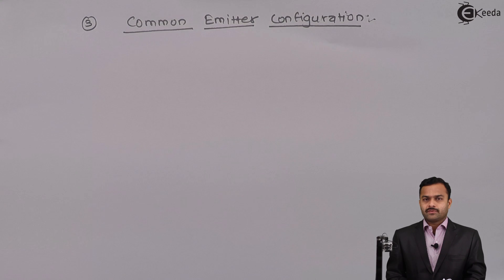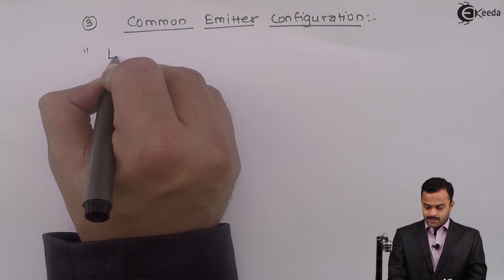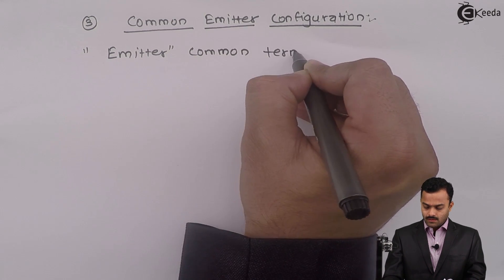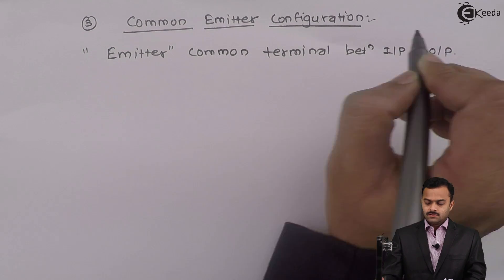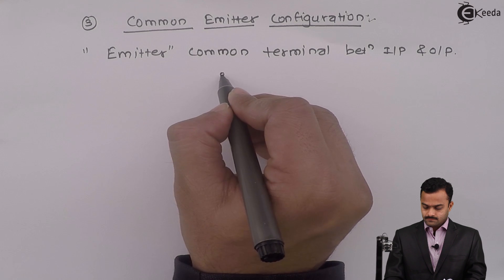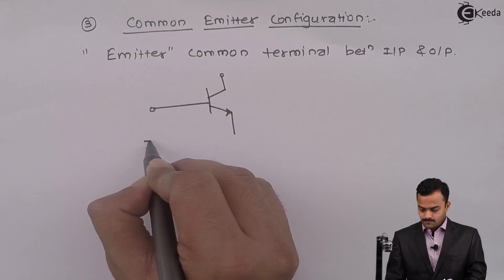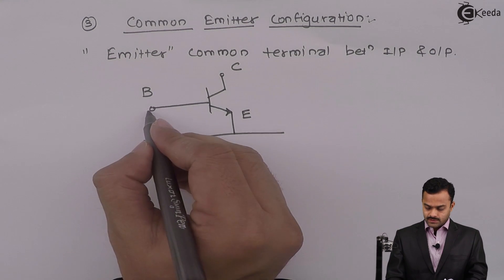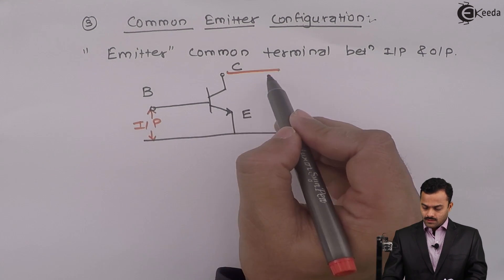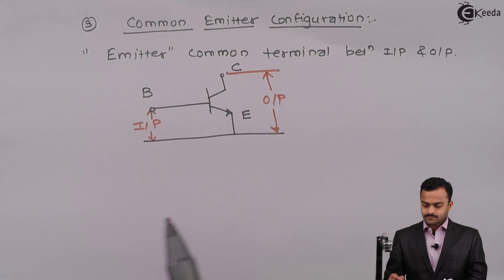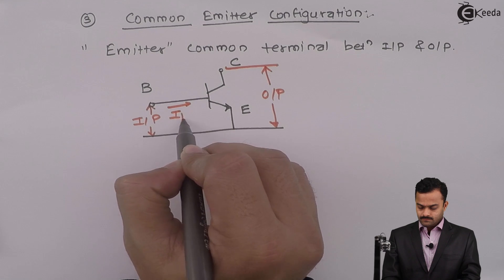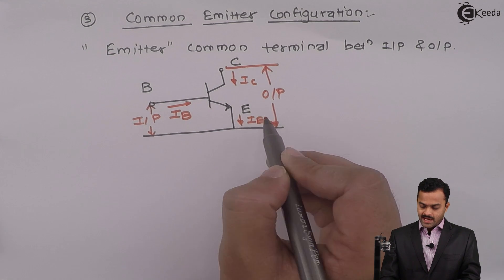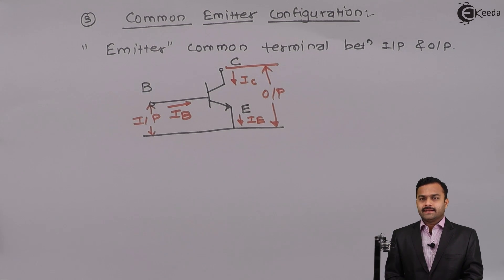The third and most important configuration is the Common Emitter configuration, also called the CE configuration. As the name suggests, the emitter is the common terminal between input and output. Let's draw the structure: we have the collector, base, and emitter, with the emitter common to both input and output ports. The input is applied between the base and emitter, and output is collected between the collector and emitter. The emitter current IE is the sum of IB and IC.